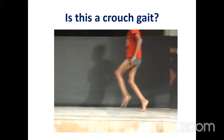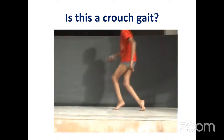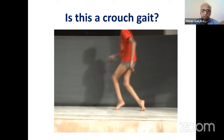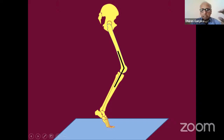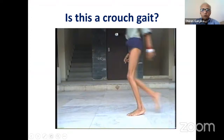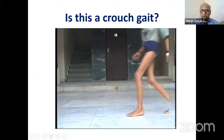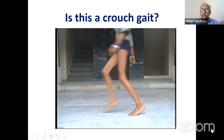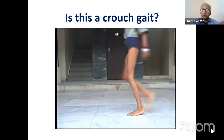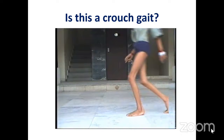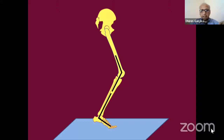If you look at this gait, the knee is flexed but the ankle is in plantar flexion. When the knee is in flexion but the ankle is in plantar flexion, we call it a jump knee gait. The next video shows apparent equinus gait - when the knee is flexed but the ankle is in neutral, we don't call it crouch or jump knee gait; we call it apparent equinus gait.